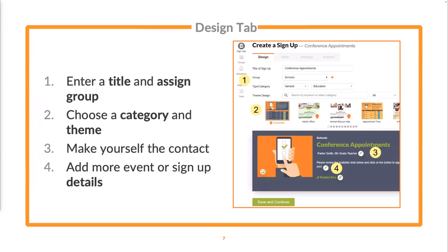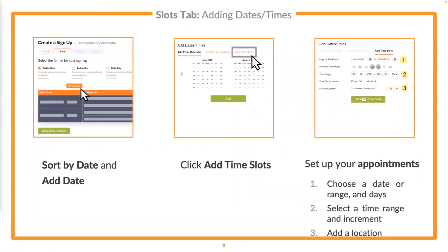You can add additional text to your sign-up by clicking the pencil icon next to the general details area. Once you've got those basics entered, the next step is your slots tab. You'll see a few different layout options: sort by date puts your dates and times on the left and your slot title on the right; sort by slot reverses those two; and slots only is good for collecting donations or party supplies where you don't need a specific date and time. Today we're going to focus on adding time slots, and I've selected sort by date, then I'm going to click add dates.